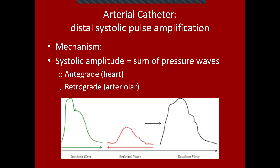And then there's the reflected wave. When that pulse wave reaches the end of its travels at the arteriolar system, some of that energy is reflected back toward the heart in a retrograde fashion. When the incident wave sums with the reflected wave bouncing off the arteriolar system, you get a resultant wave with a different size and shape, changing depending on how close you are to the reflection point.